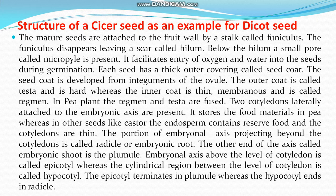The structure of a bean seed is an example of a dicot seed. The mature seed is attached to the fruit wall by a stalk called the funiculus. The funiculus disappears, leaving a scar called the hilum. Below the hilum, a small pore called the micropyle is present. The micropyle is a small opening used for the exchange of gases and uptake of water.